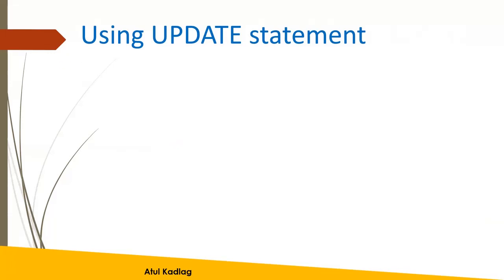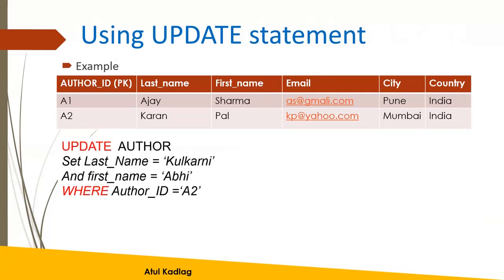As an example, we wanted to change the last name and first name for the A2 ID, where we currently have last name as Karan and first name as Pal, and we wanted to change them to new values. So we use UPDATE author, then SET last_name equals the new value, first_name equals the new value, WHERE author_ID equals A2 — targeting that specific A2 row.